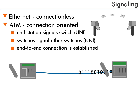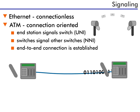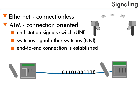ATM, in contrast, acts more like the telephone. Before you can communicate, you need to dial the remote phone number. Then your phone signals its local phone switch, which then signals another, then another, until the remote phone is contacted. This communication between telephone devices is called signaling, and operates just like ATM data devices do.